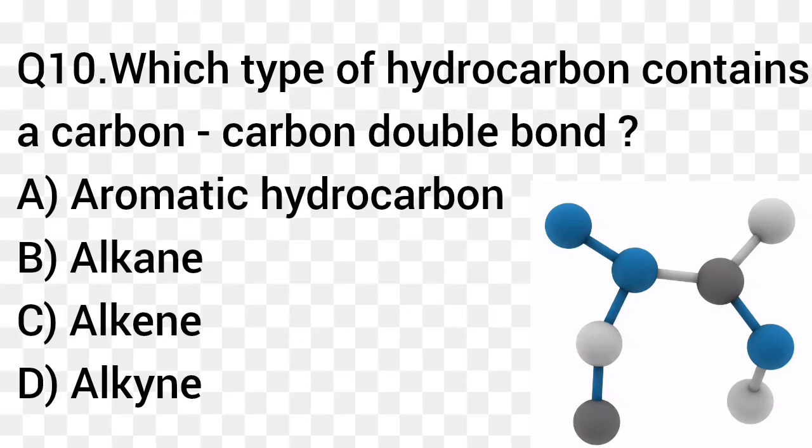Question number 10. Which type of hydrocarbon contains a carbon-carbon double bond? Option A: Aromatic hydrocarbon. Option B: Alkane. Option C: Alkene. Option D: Alkyne. The right answer is option C, Alkene.